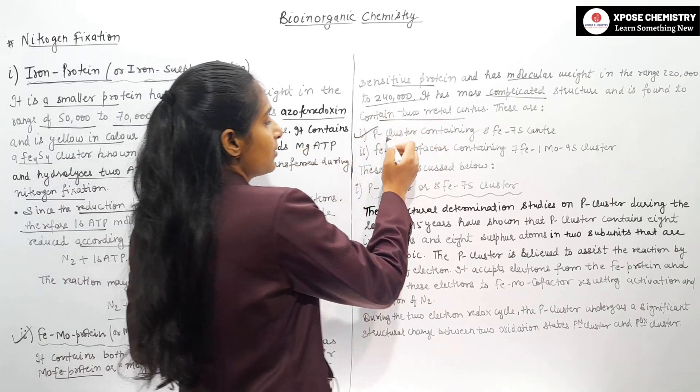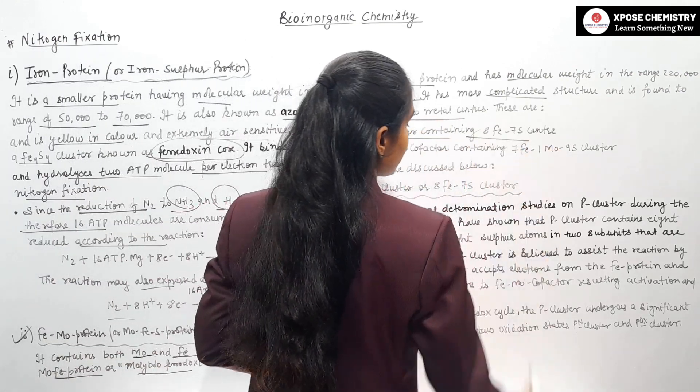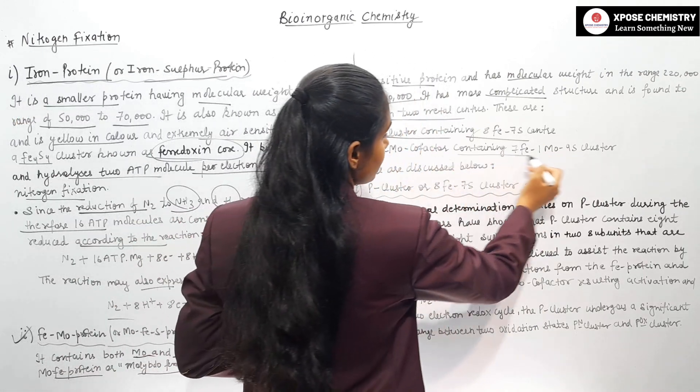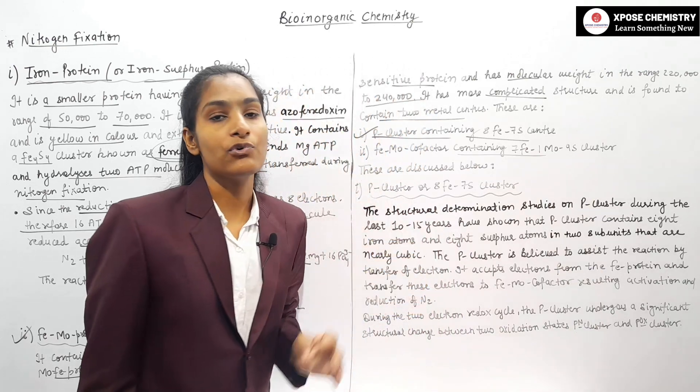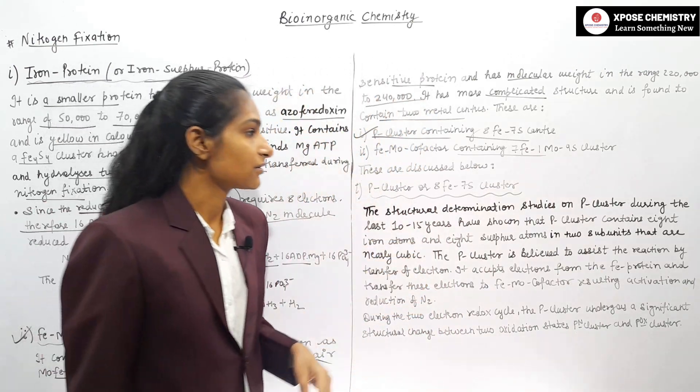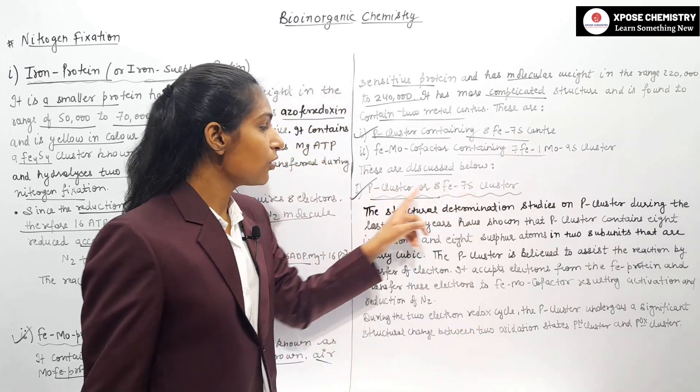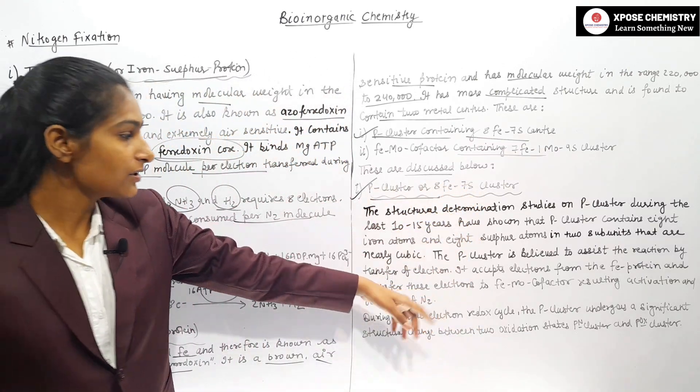Fe-Mo protein contains two important clusters: first, P-cluster which contains 8 Fe and 7 S centers; second, Fe-Mo cofactor which contains 7 Fe, 1 Mo and 9 S clusters. These are discussed below.